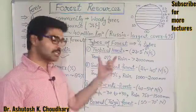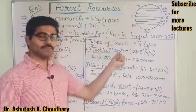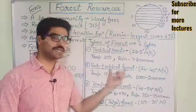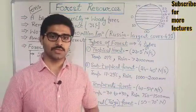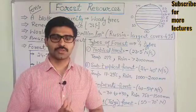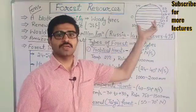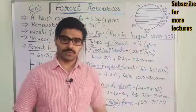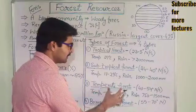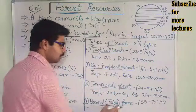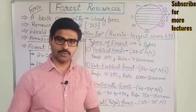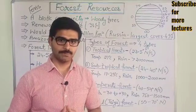The four categories are: first, tropical forests; second, subtropical forests; third, temperate forests; and fourth, boreal or taiga forests. This classification is based on geographical location and climatic and environmental conditions. So there are four types of forests: tropical, subtropical, temperate, and taiga.